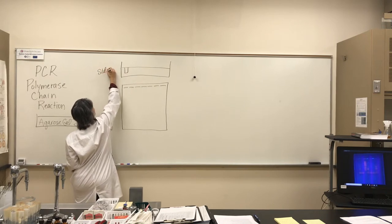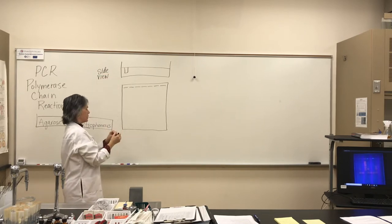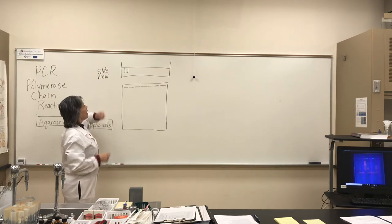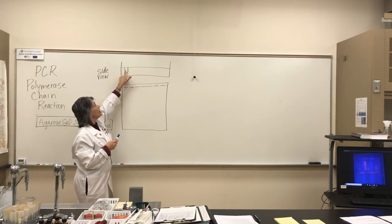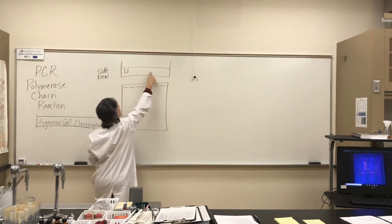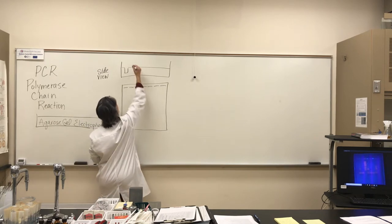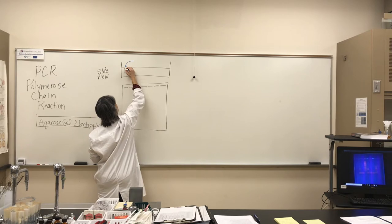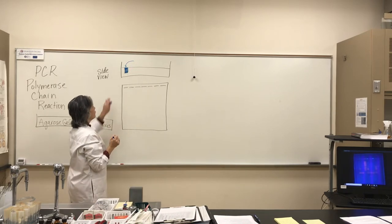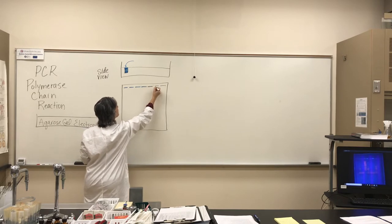Here's a side view. A little dyslexic sometimes. Side view of the gel. So from a side view, this is what a well would look like. This is all agarose. This is an opening that we squirted our samples into. So from the side, we deposited our sample. We've got our sample in our well.